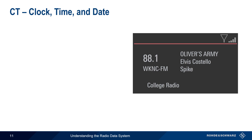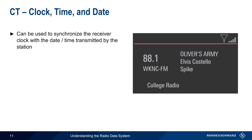The CT parameter can be used to synchronize the receiver clock with the date and time transmitted by the station. Note that the accuracy of the synchronization is only on the order of about one-tenth of a second.